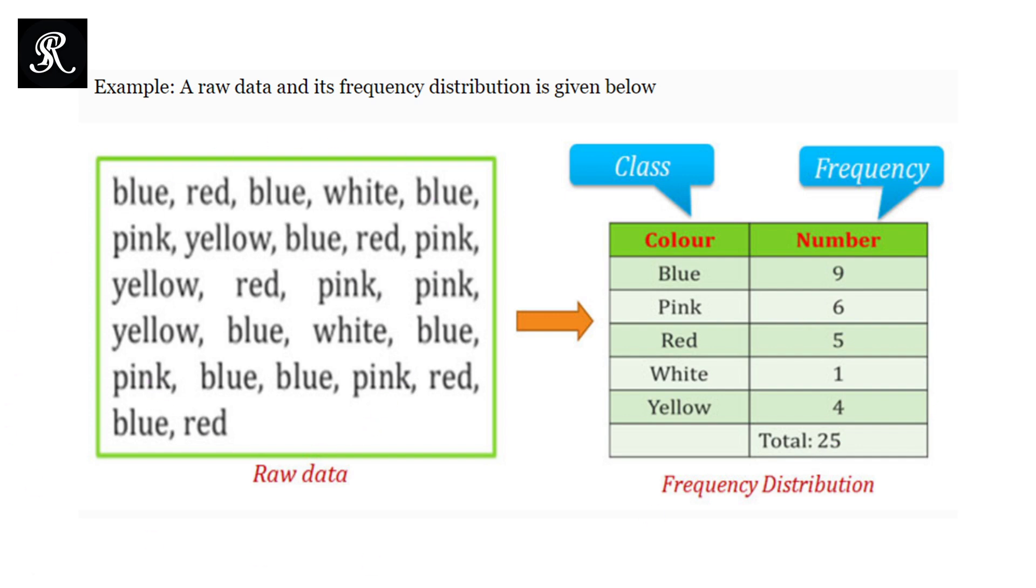So the frequency distributions are useful for summarizing data sets. As here the data set is not too much large, but sometimes we are given large data sets, and frequency distributions are useful for summarizing large data sets and identifying patterns or trends within the data. They provide a clear visual representation of how the data is distributed across different categories or ranges.